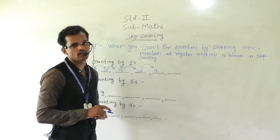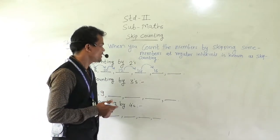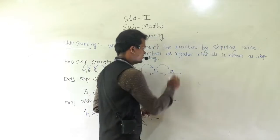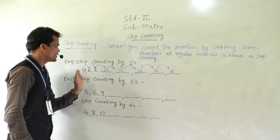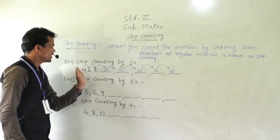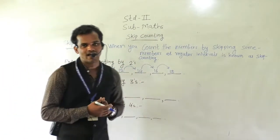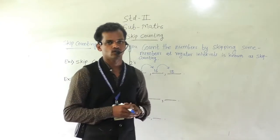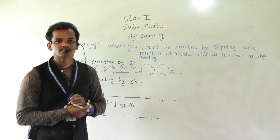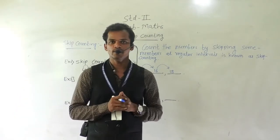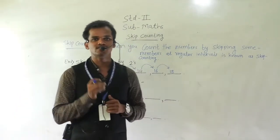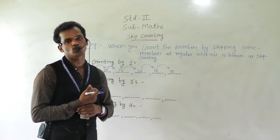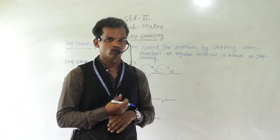Then again count forward by 2: 17 and 18. Here you can see every time 2 numbers are skipped and we have written the next number. This is called skip counting — you count the number by skipping some numbers at regular intervals.